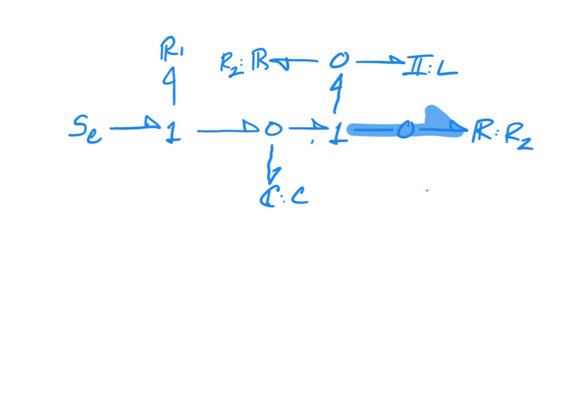Hence our simplified bond graph would be an effort source in series with an inductor. That combo would be in parallel with a capacitor, which would be in parallel with this loop, which is made up of a resistor in parallel with an inductor, and that combination in series with a resistor. And there's our finalized simplified bond graph.